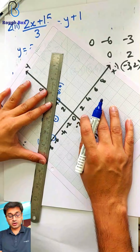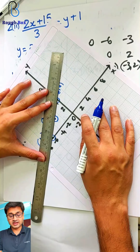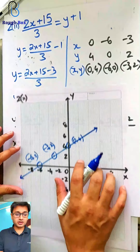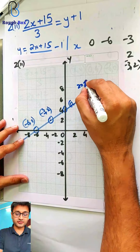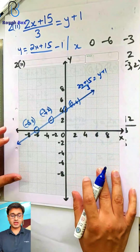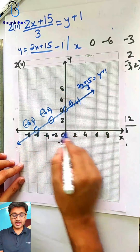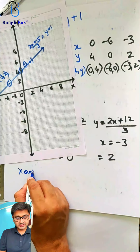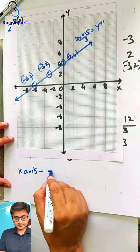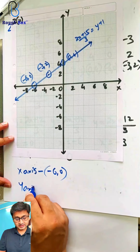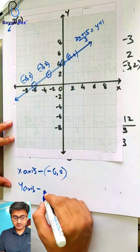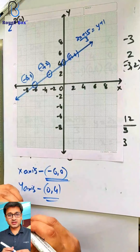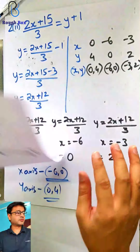You are lucky that you already got the coordinates where it is hitting the x-axis and the y-axis directly. Write the equation: 2x plus 15 by 3 equals y plus 1. Where is it hitting the coordinate axis? On x-axis: (minus 6, 0). On y-axis: (0, 4). So we got both answers straight away. Brilliant — you will get most of the sums in this exercise.